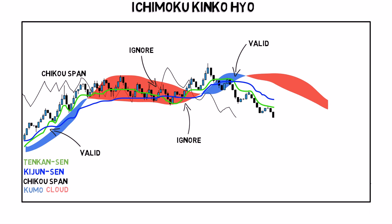The Chikospan is simply a copy of the price action plotted a certain number of periods behind. The default setting places it 26 periods behind the price action. However, you can experiment with this setting yourself.